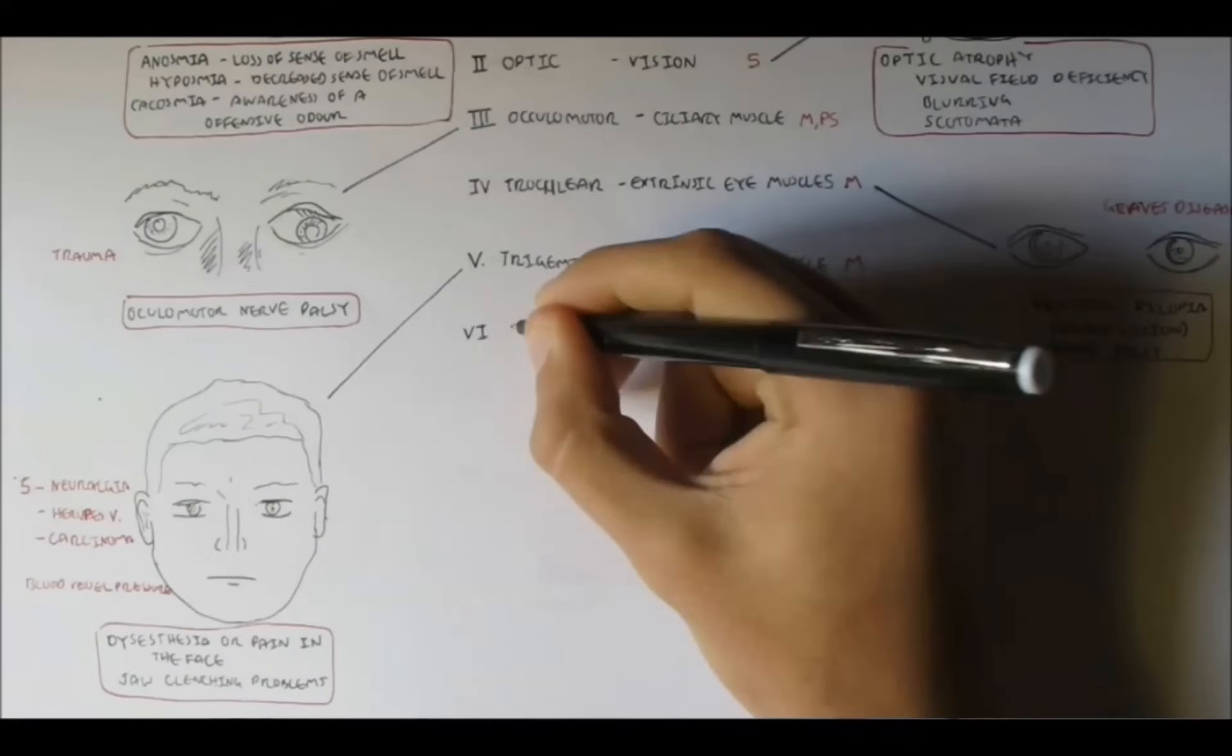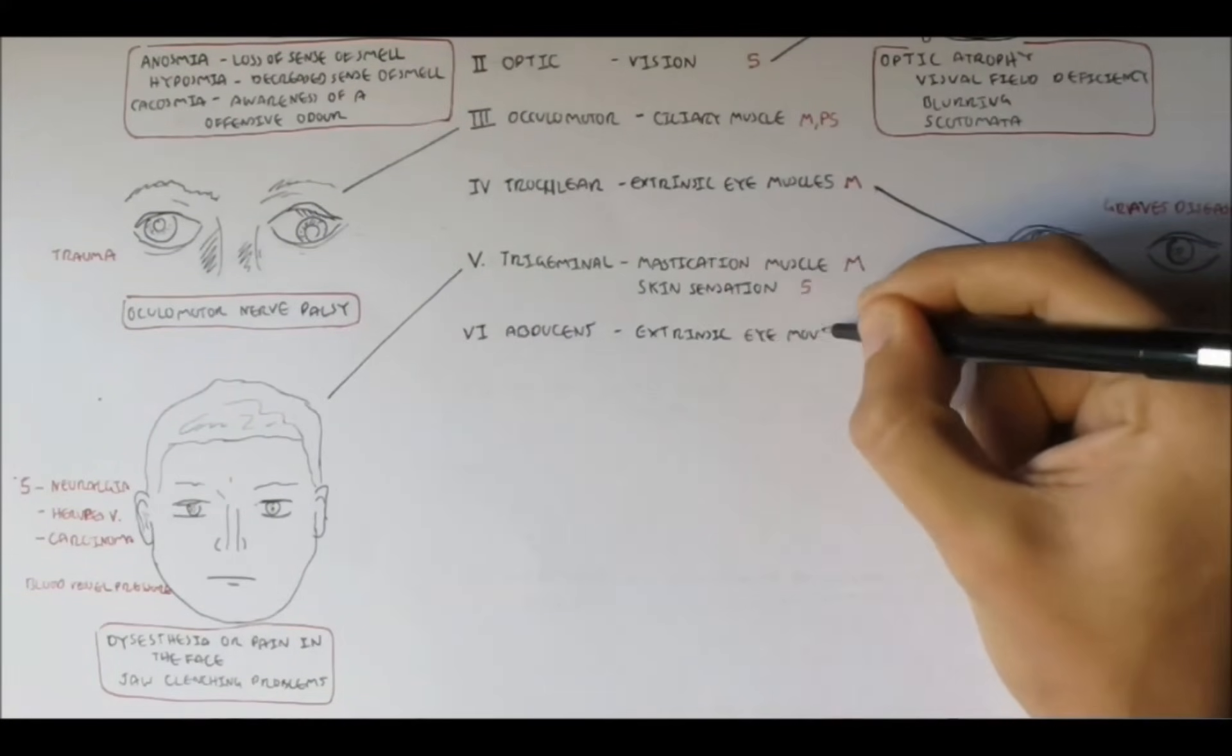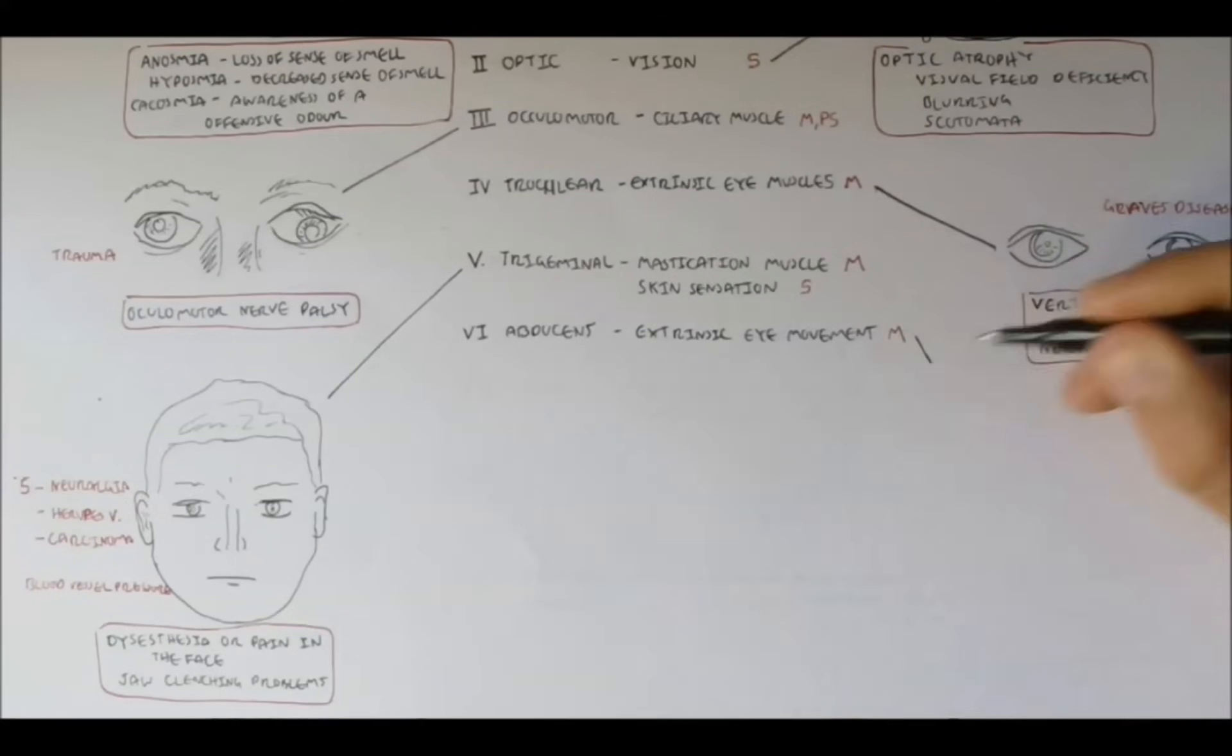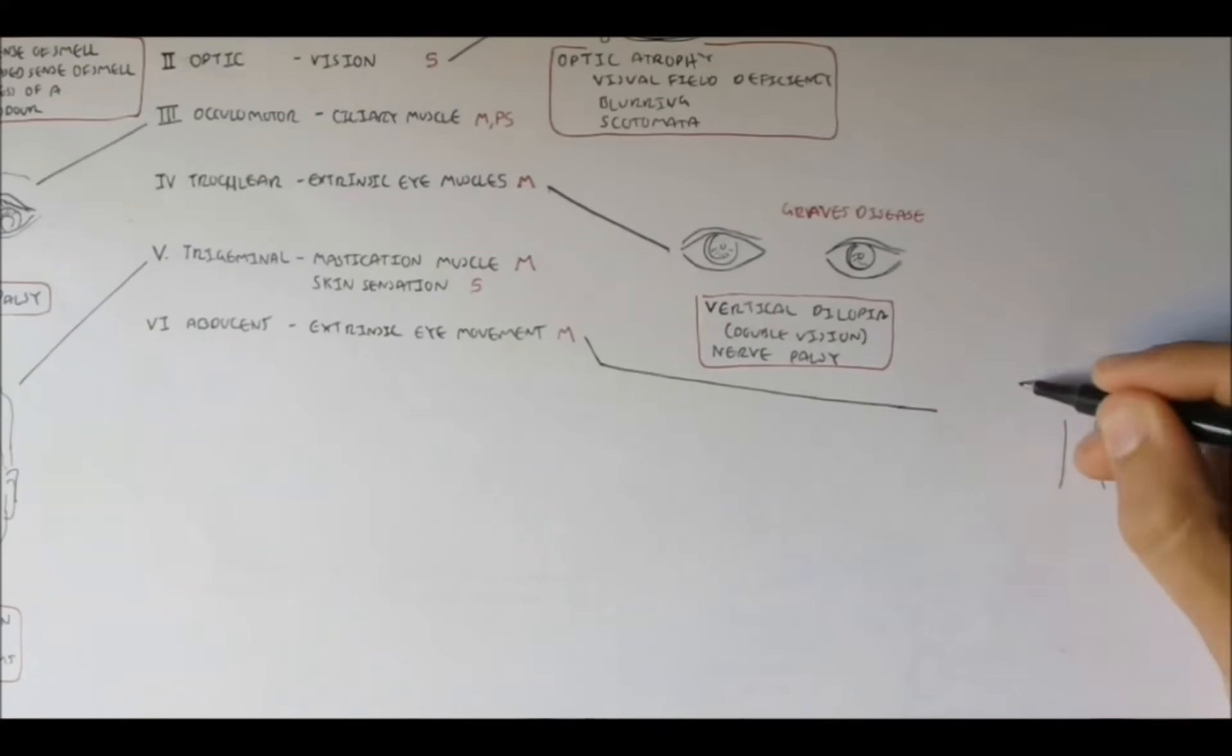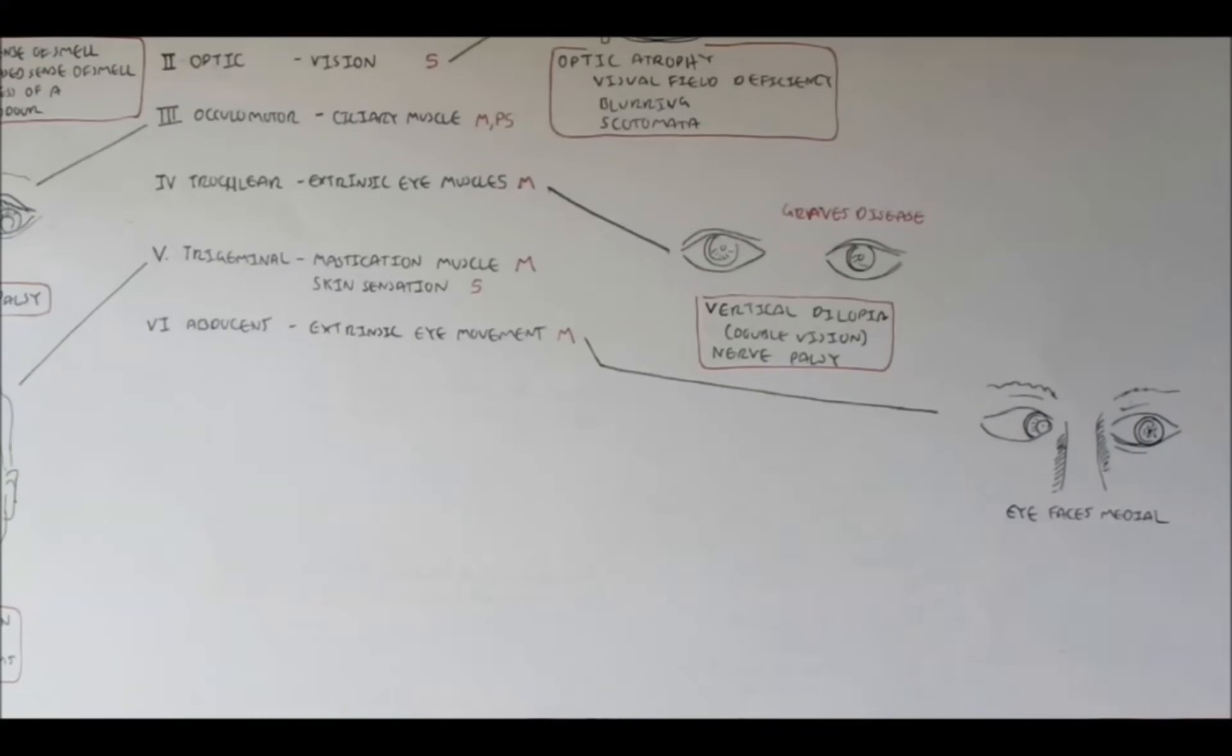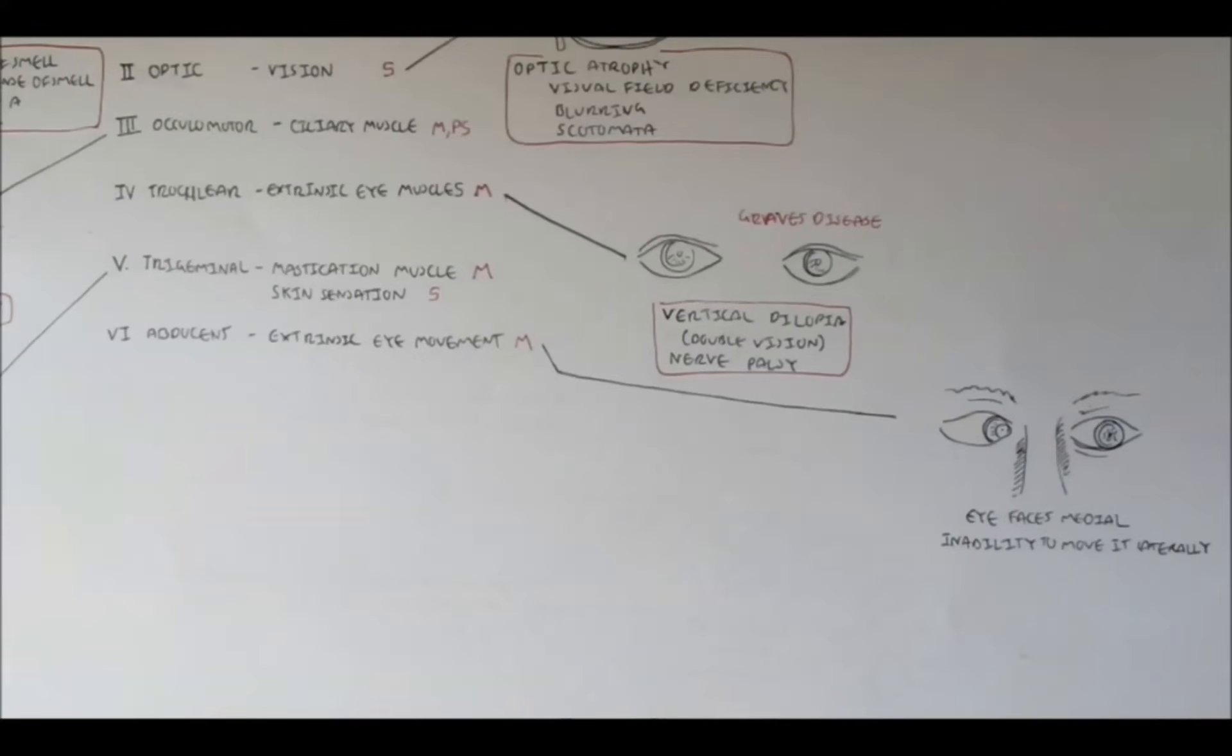Next is nerve 6, which is the abducens nerve, controls extrinsic eye movement, and it is very much associated with nerve 4. The abducens nerve is a motor nerve. The common associated feature of this nerve is that the person's eye, typically, one faces medially and cannot be moved laterally. So it cannot be abducted. That is why this nerve is called an abducens nerve, because under normal conditions, if it's not damaged, it can abduct the eye. Abduction, abducens nerve.